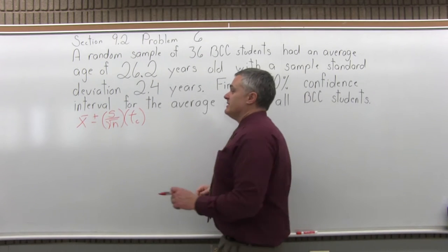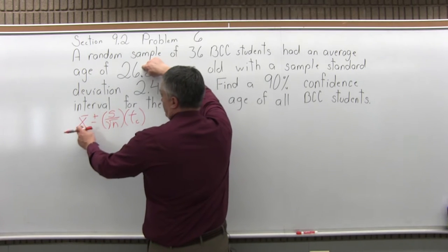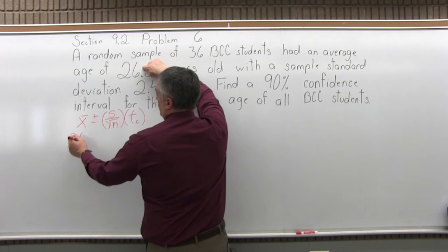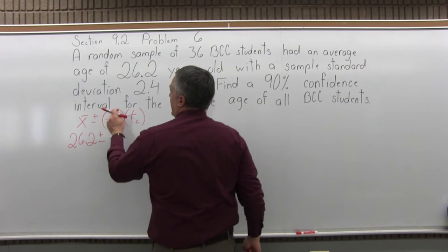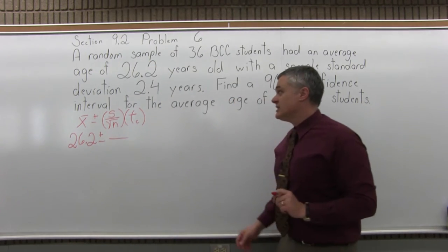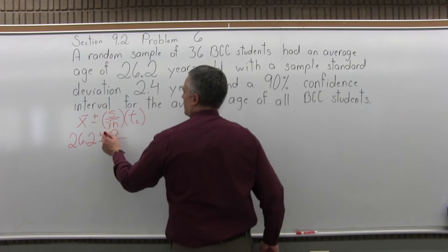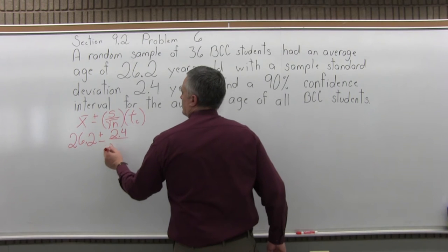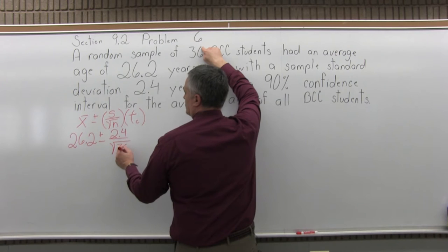Now as we fill this in, the X bar stands for the sample mean, which it says the average of our sample is 26.2 years old. Then plus or minus S, the sample standard deviation, which is 2.4 years. Again, the question tells us that. And that's going to be divided by the square root of N. N is the size of the sample, which is 36.